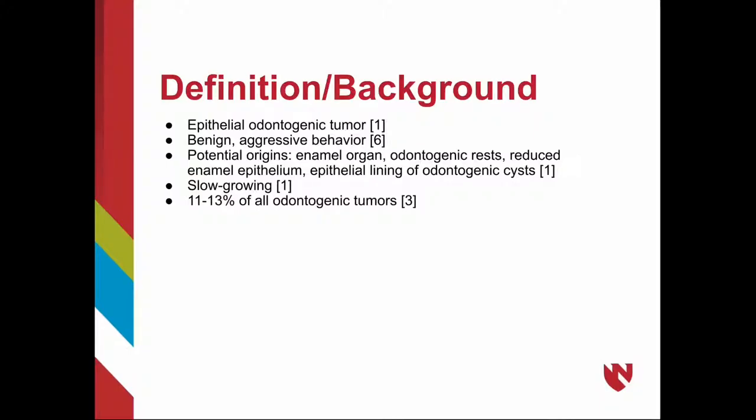Ameloblastoma is an epithelial odontogenic tumor. It is benign but behaves aggressively. The potential origins are the enamel organ, odontogenic rests, reduced enamel epithelium, and the epithelial lining of odontogenic cysts. It is slow-growing and accounts for 11 to 13 percent of all odontogenic tumors.